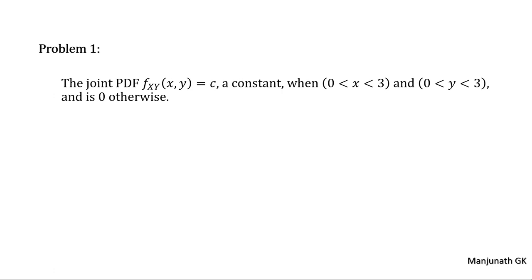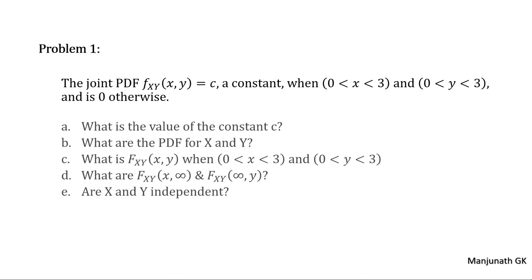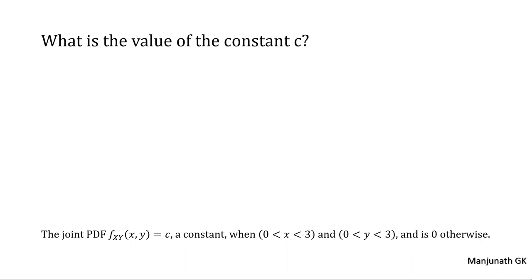Based on all those concepts, let us solve some problems. The joint PDF, also called the bivariate PDF, equals C when X and Y are varying from 0 to 3, and equals 0 otherwise. For such a bivariate PDF, calculate the value of C, the marginal PDFs for X and Y, the bivariate CDF when X and Y vary from 0 to 3, the CDFs Fx(x) and Fy(y), and whether X and Y are independent.